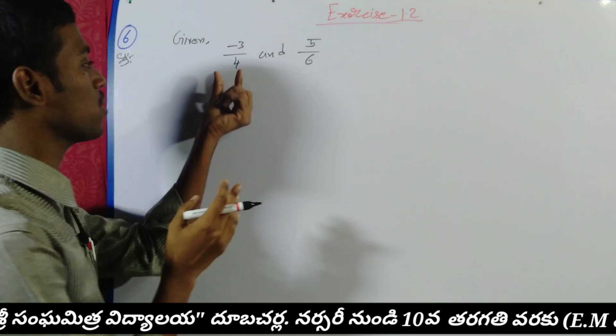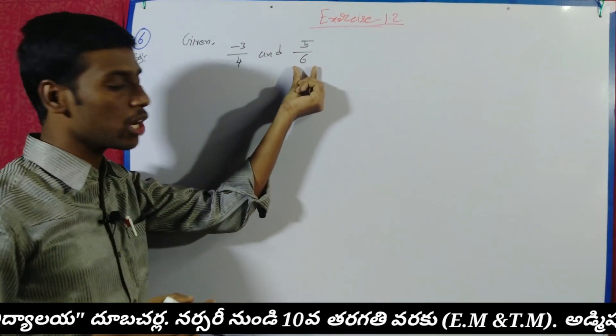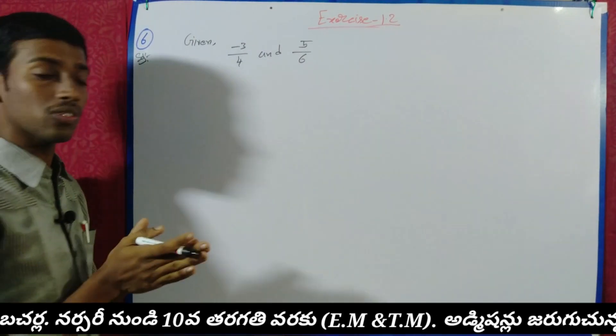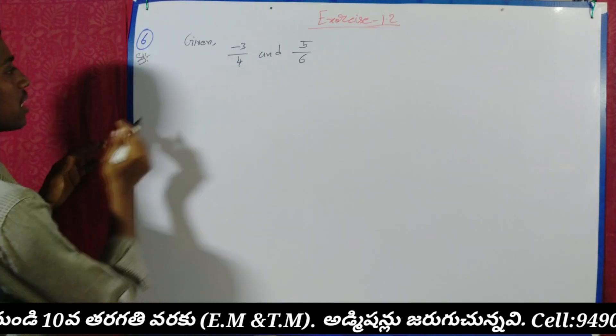First of all, we have to equalize these two rational numbers to make the solution easier.